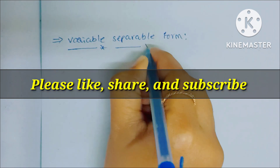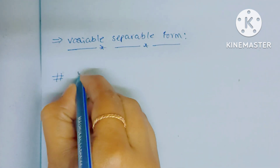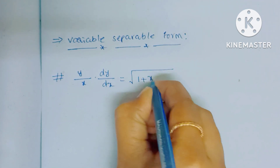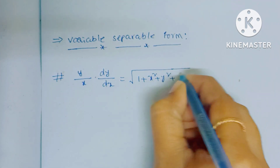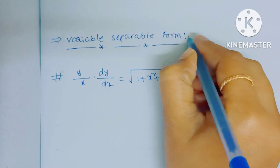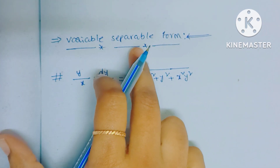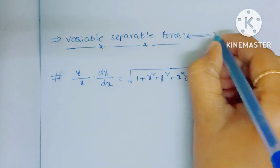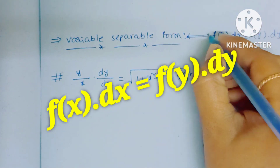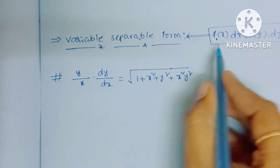The problem is: (y/x) · (dy/dx) = √(1 + x² + y² + x²y²). We will solve this in this video. For variable separable form, the equation should be expressible as f(x)·dx = g(y)·dy — that is, x terms and dx on one side, and y terms and dy on the other side.